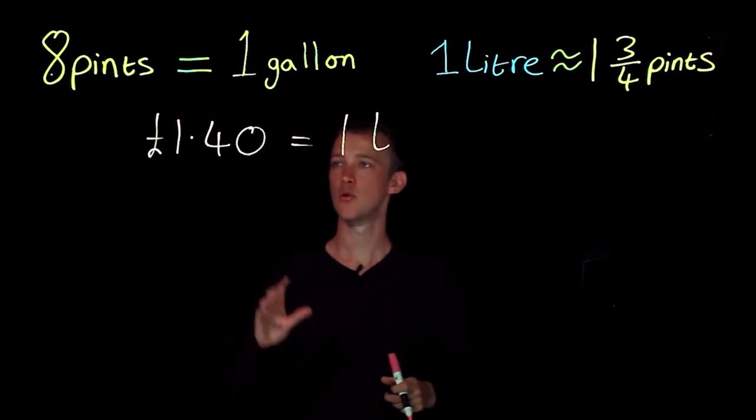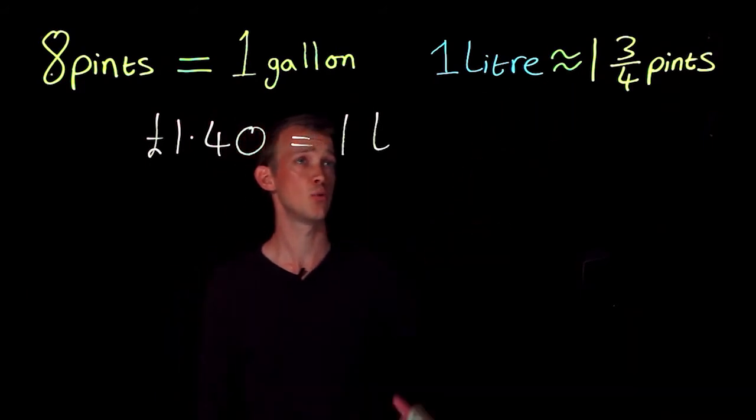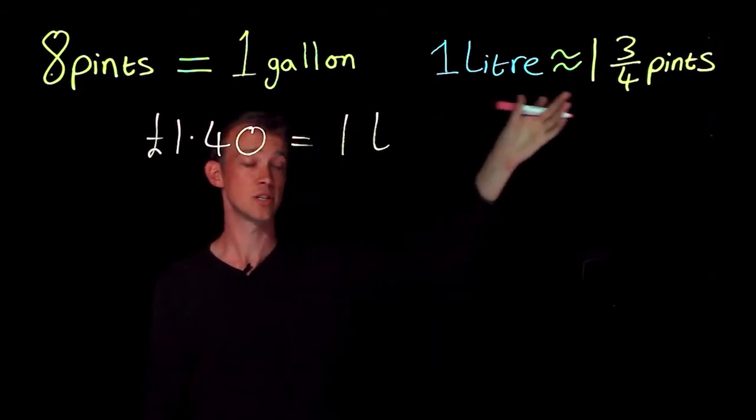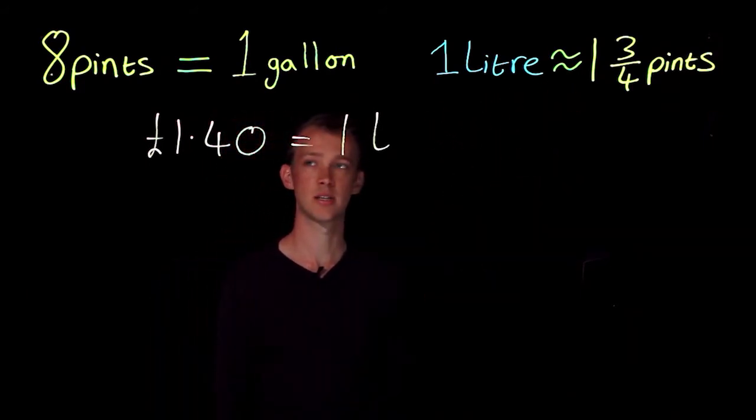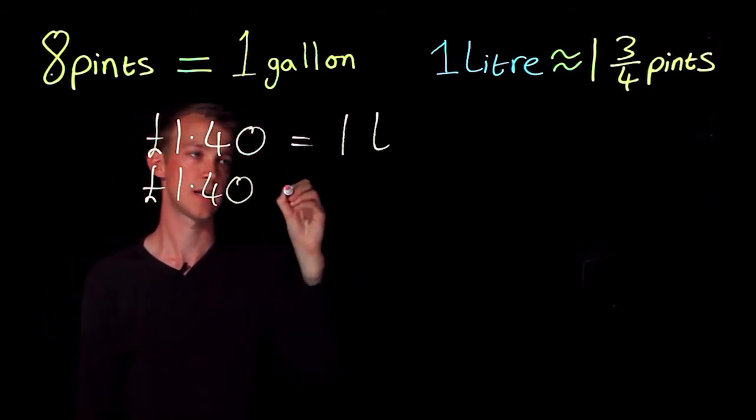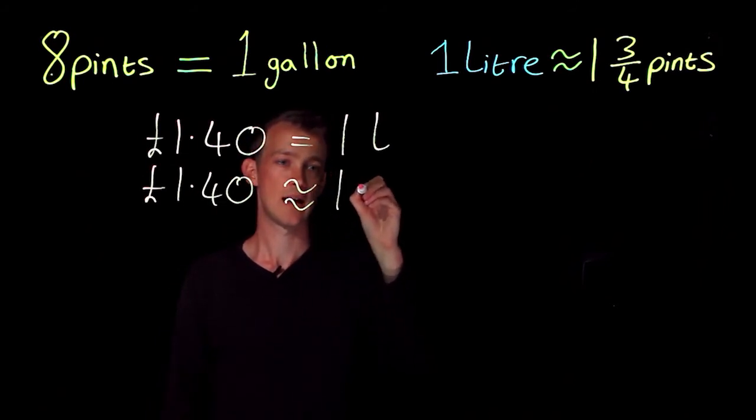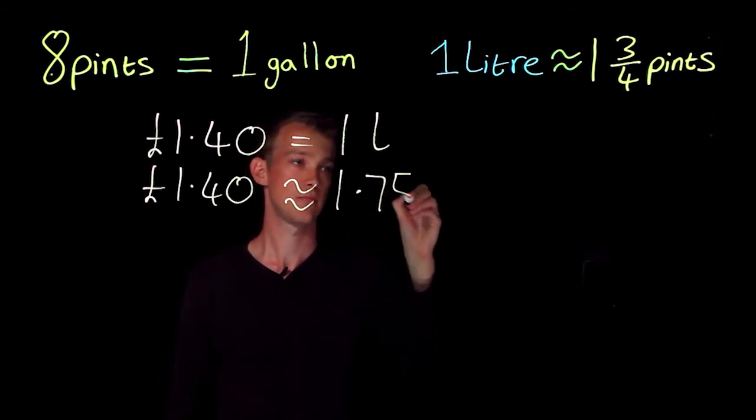Well first of all I'm going to be saying that I know that one pound 40 is approximately equal to one and three-quarter pints, because I know that one liter is approximately one and three-quarter pints as well. So one pound 40 is approximately equal to 1.75 pints.